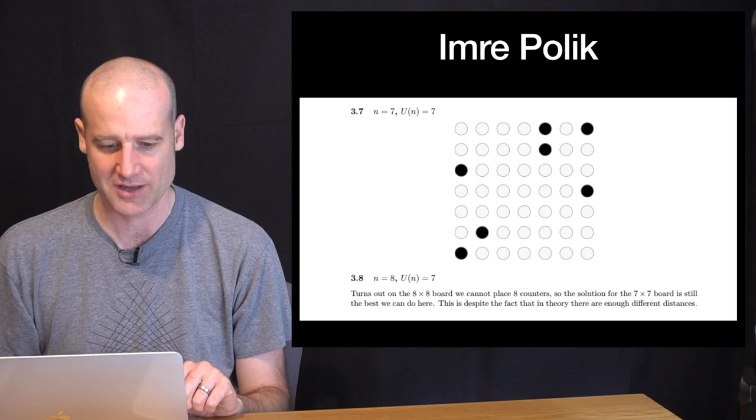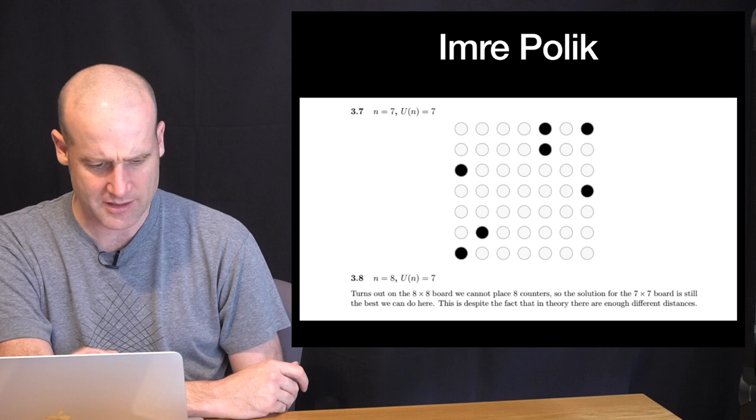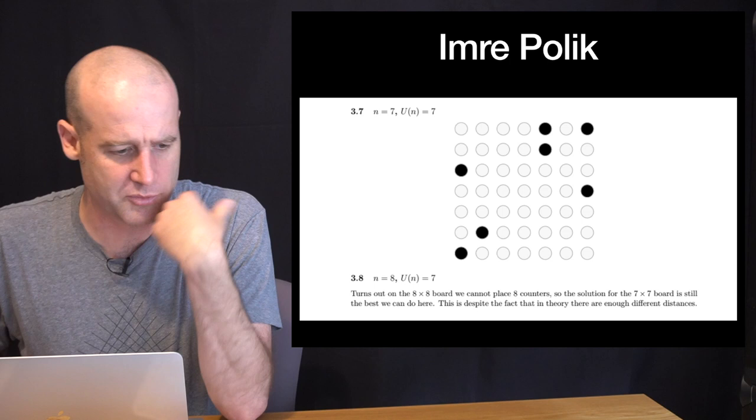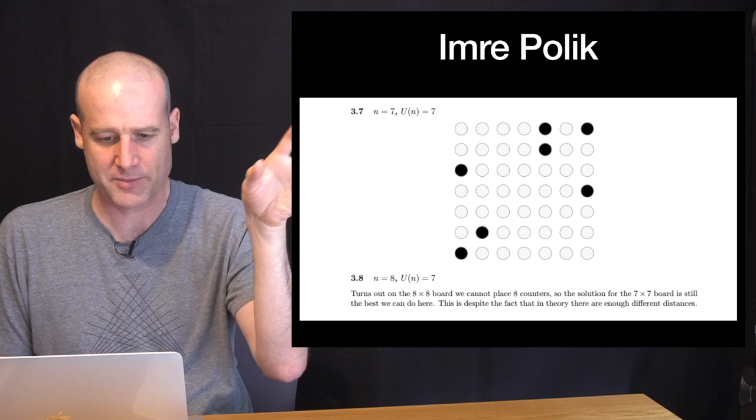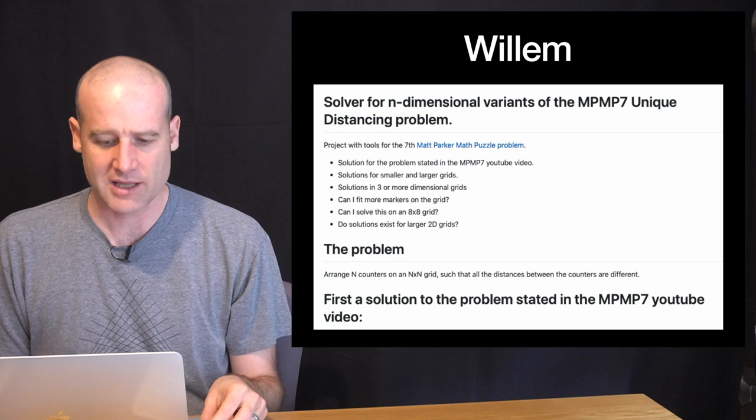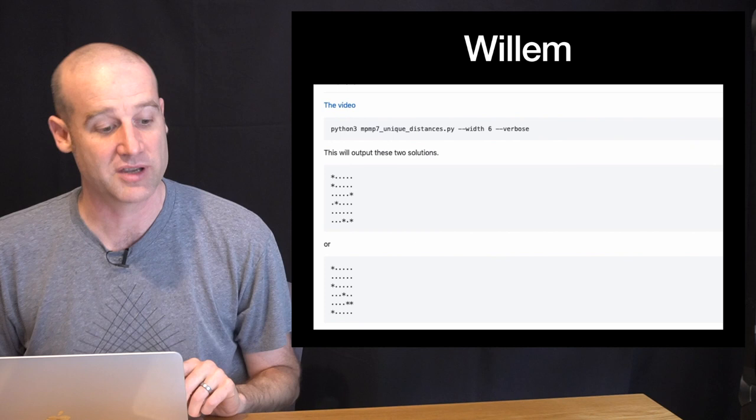Imra here has a visualisation showing the 8x8 board. And they are unable to find a solution for that. We're going to have a link. The whole paper is on Google Drive. I'll have a link to that below if you want to go check it out. And likewise, Willem here looked at bigger and bigger grids. It's all up on GitHub. I'll have a link to that below. You can check it out.